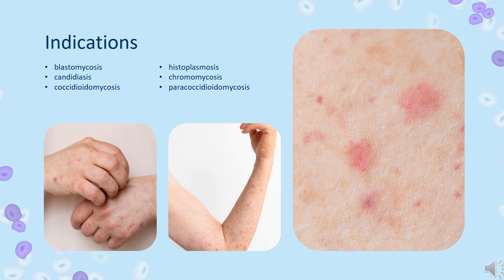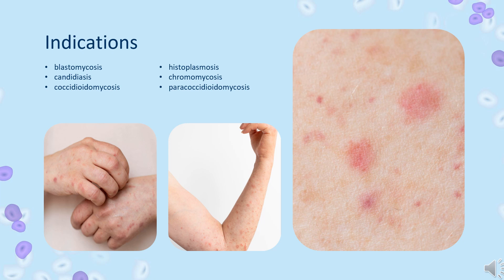Ketoconazole is used in the treatment or prevention of fungal infections including blastomycosis, candidiasis, coccidioidomycosis, histoplasmosis, chromomycosis, and paracoccidioidomycosis. In Europe, it is also used in the treatment of endogenous Cushing syndrome.